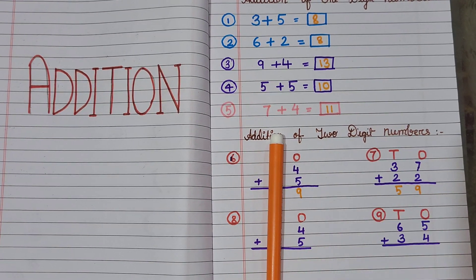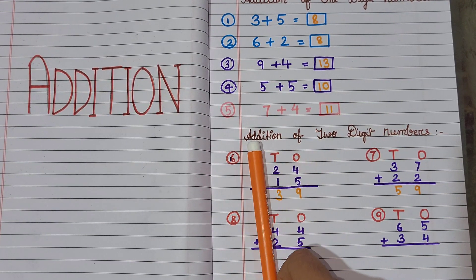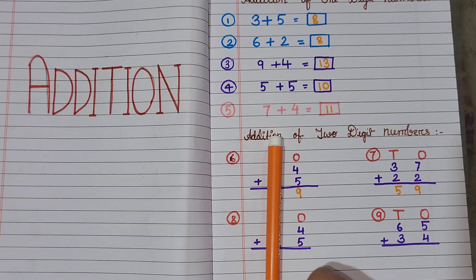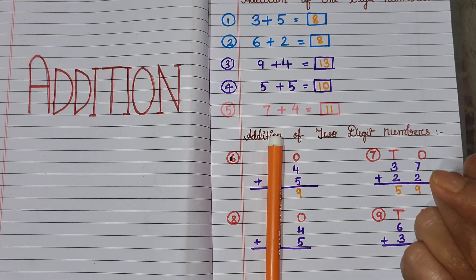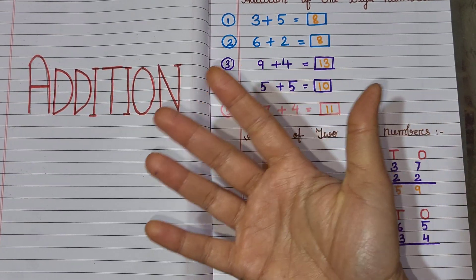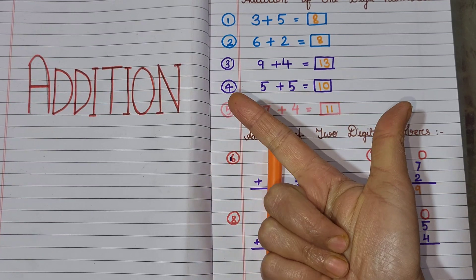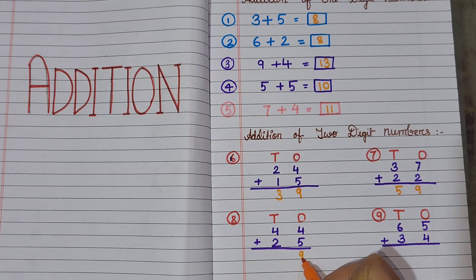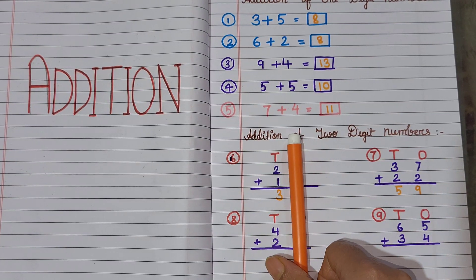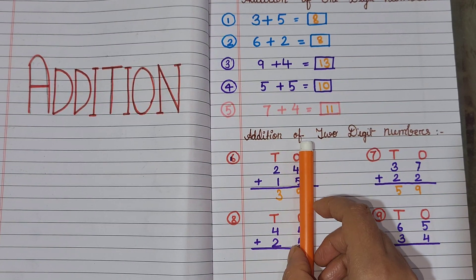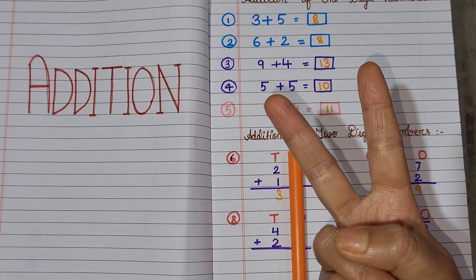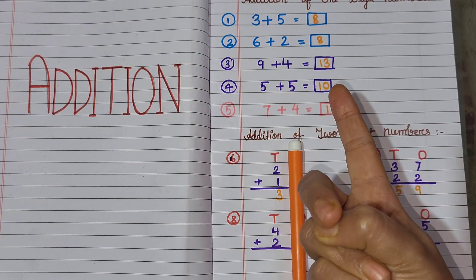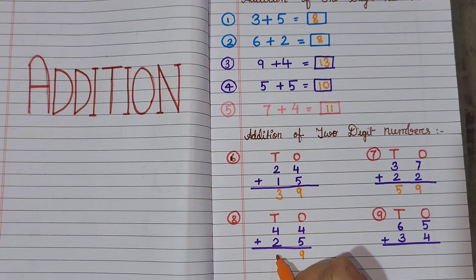Next, ones mein jo hai, we'll add them. 4 in my mind, 5 fingers up. 4 ke baad konsa number? 5, 6, 7, 8, 9. 4 plus 5 equals 9. Tens: 2 plus 4. 4 in my mind and 2 fingers up. 4 ke baad konsa number? 5 and 6. That means 69.